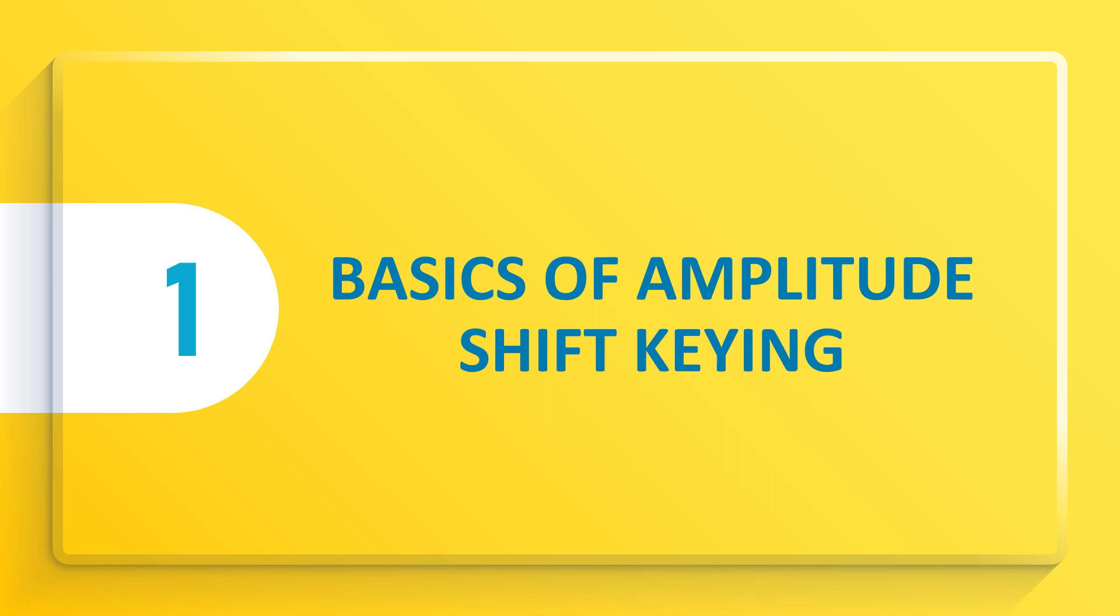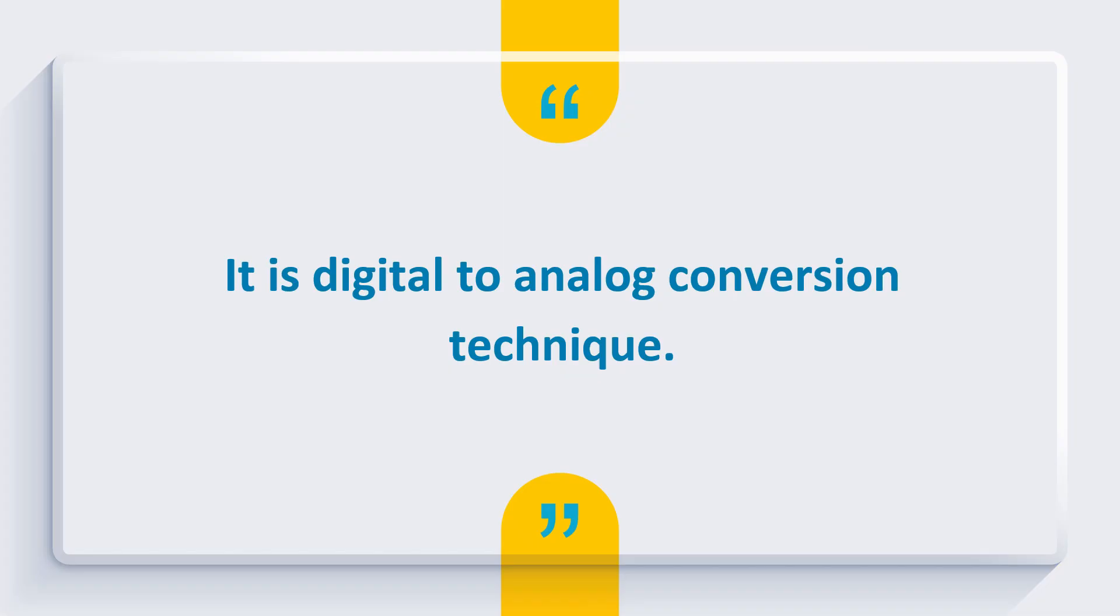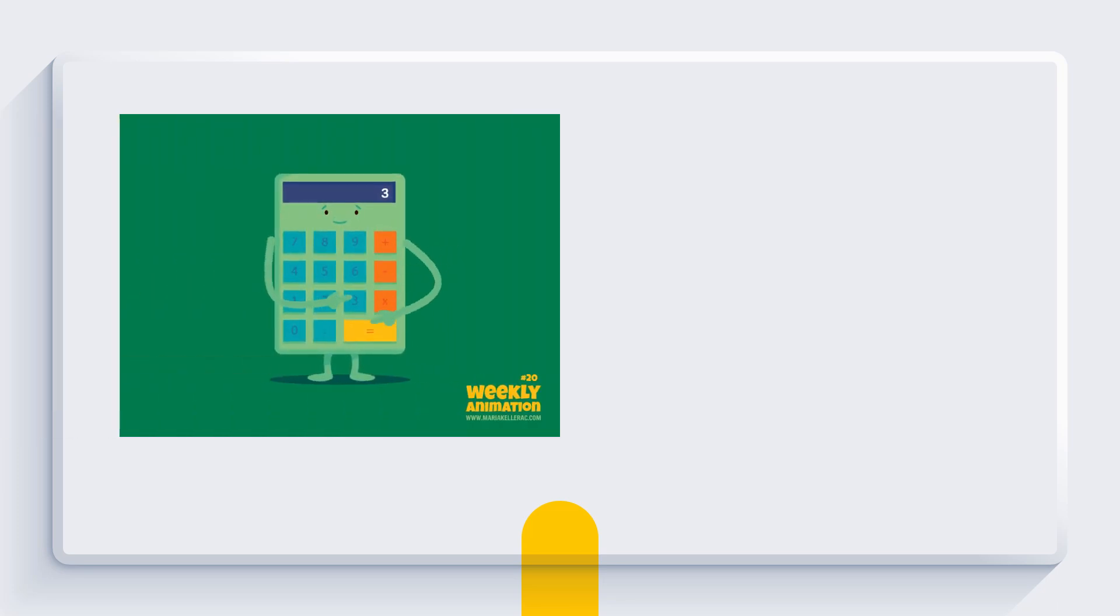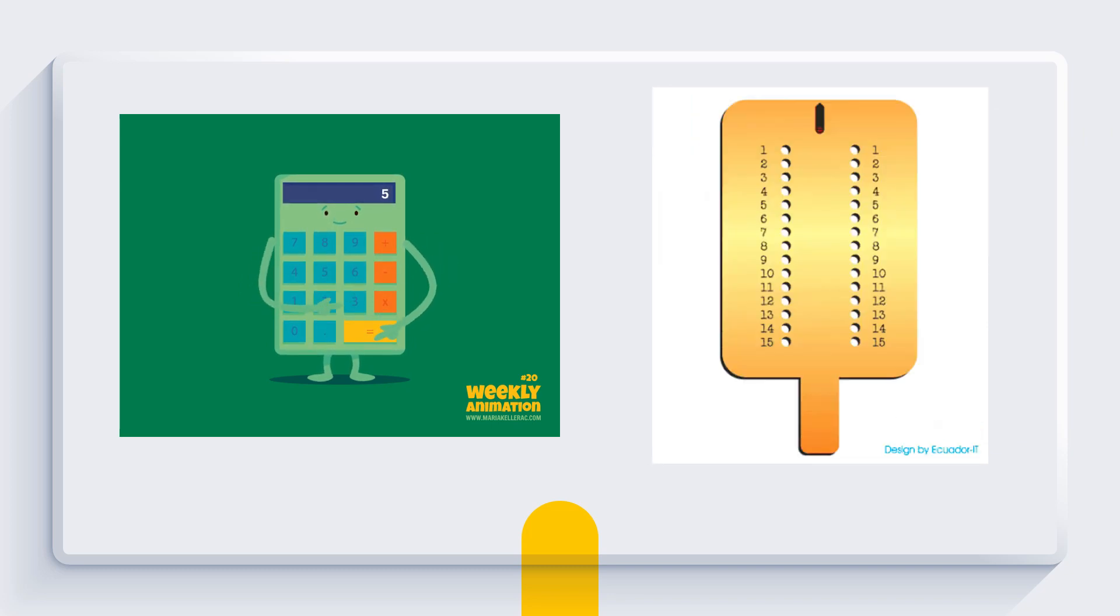But first, let's talk about the basics of Amplitude Shift Keying. So when we say Amplitude Shift Keying, it is a digital to analog conversion technique. It's like solving a mod problem using calculator turns into an abacus. Easy right?